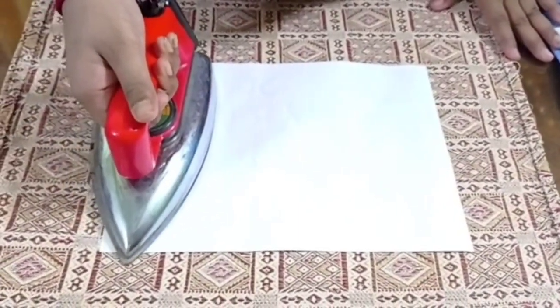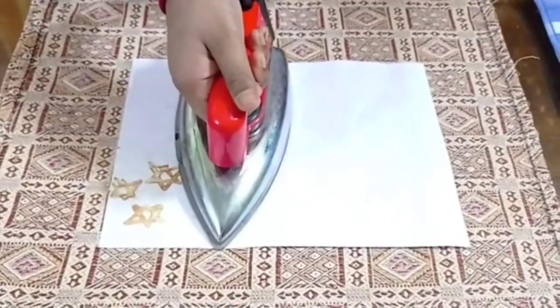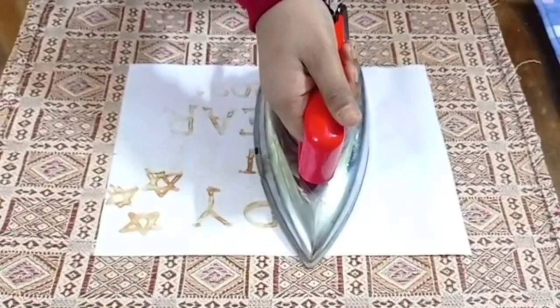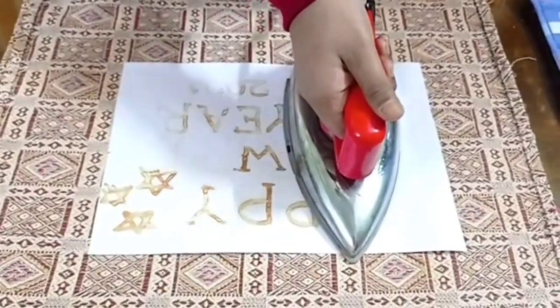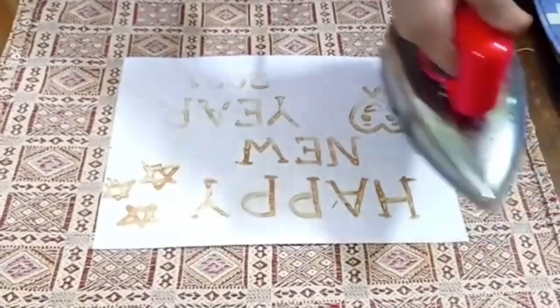Friends, don't do these steps alone, take the help of your parents or another adult. My mother is here with me. While ironing, make sure not to keep it on the paper for a long time, otherwise the paper may catch fire.